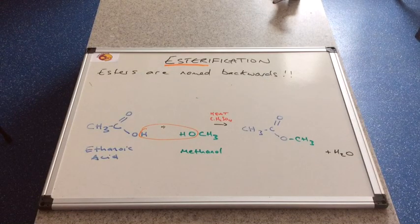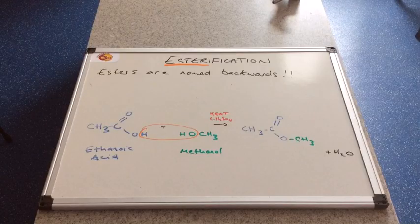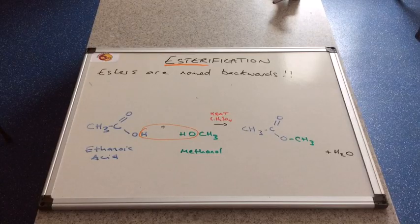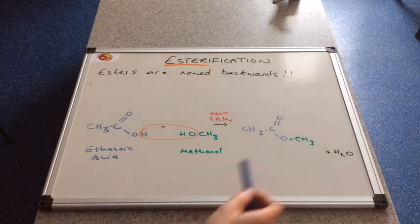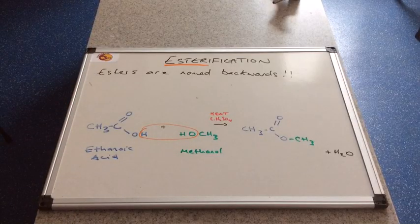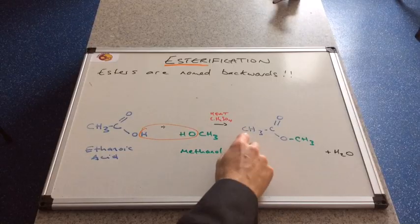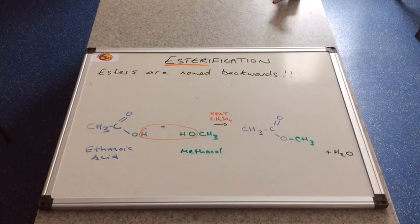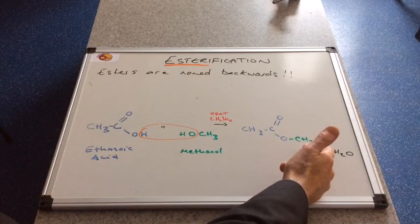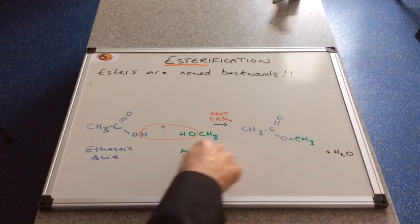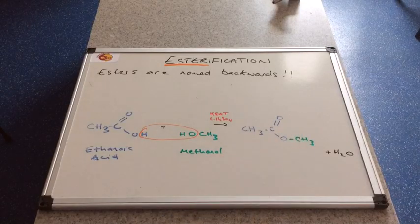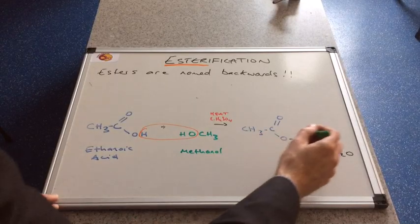We're going to have a go at naming this ester now. And esters are notoriously difficult for students to name. So I'm hoping that this video will help you to sort that out. So we're going to name this ester. And you can see there that I've written on the screen: Esters are named backwards. So you would normally name something from left to right. But with esters we actually name them from right to the left. So the first part of the name is this green part here. Now that's come from the alcohol. And what is this green group called? It's called a methyl group. So the first part of this ester name is methyl.